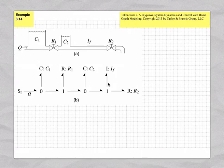We want to derive the differential equations. We have a system with three energy storing elements: two accumulators represented by C elements, and one pipe represented by an I element. Thus, potentially, we're going to have three differential equations.